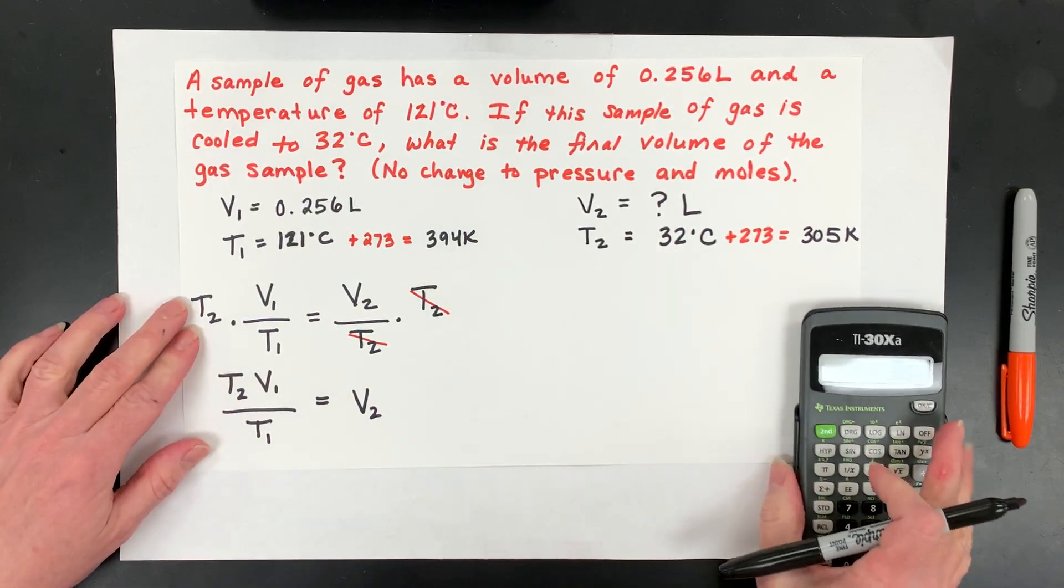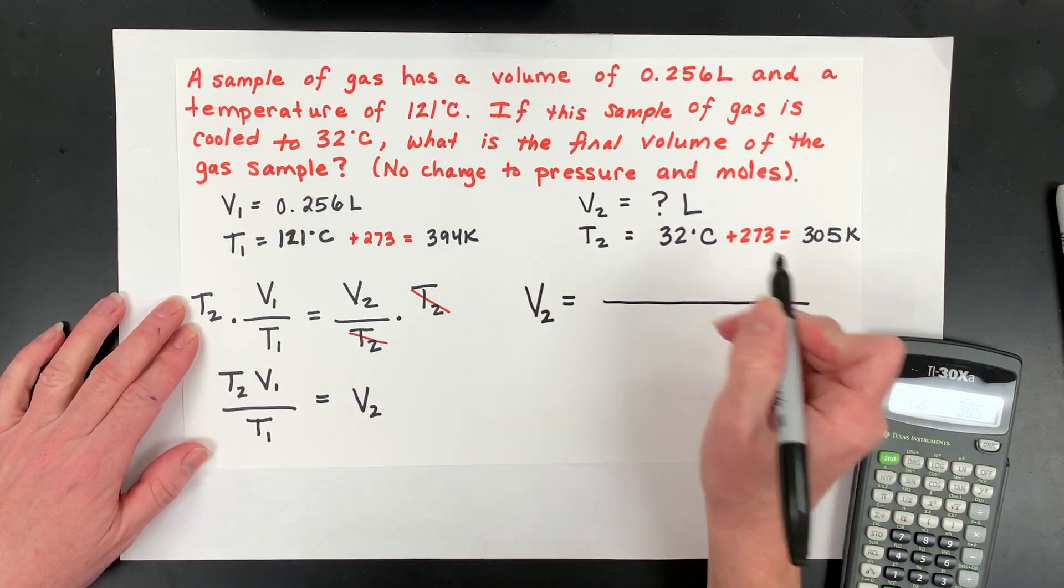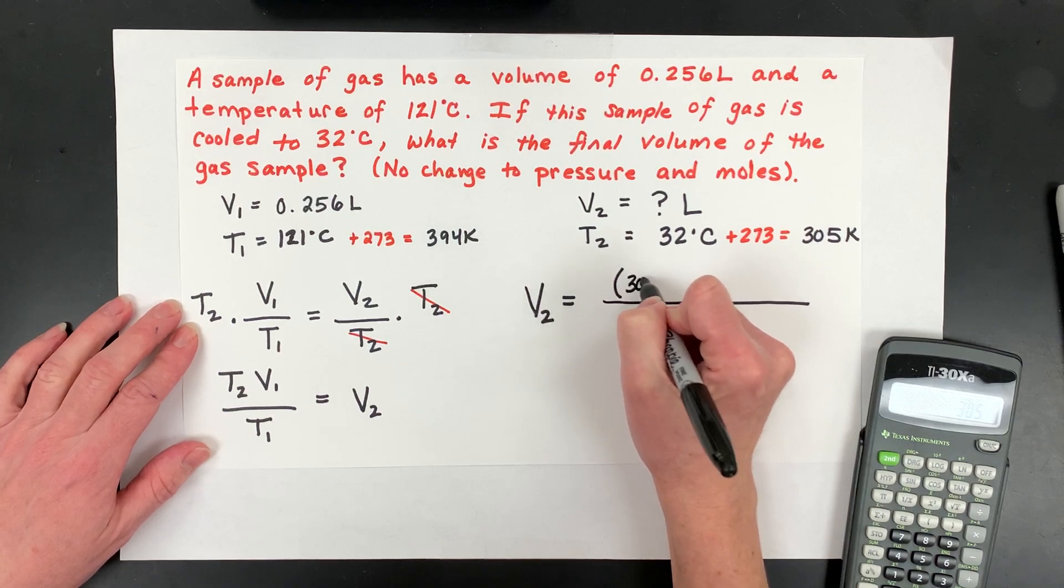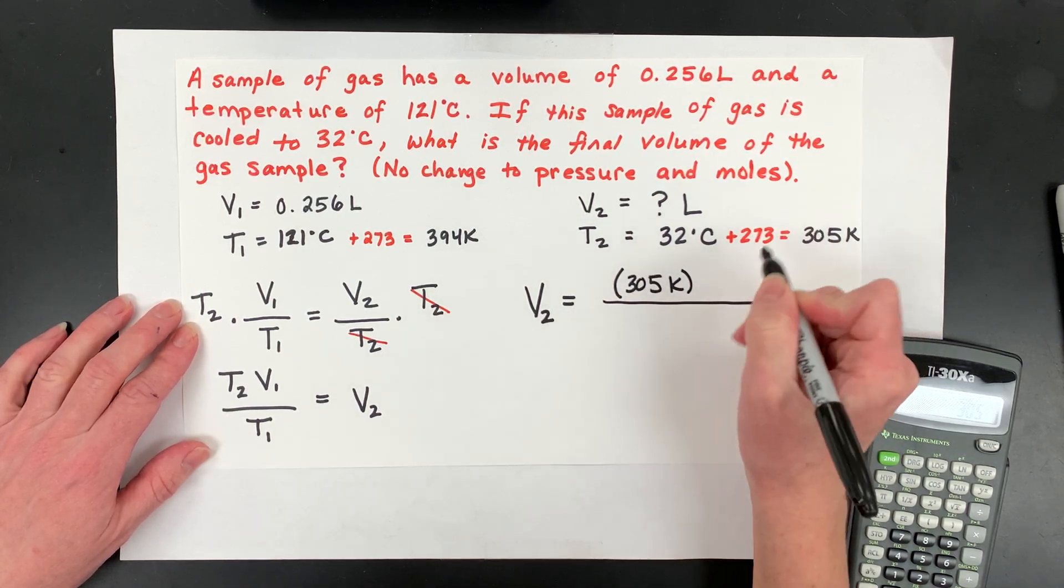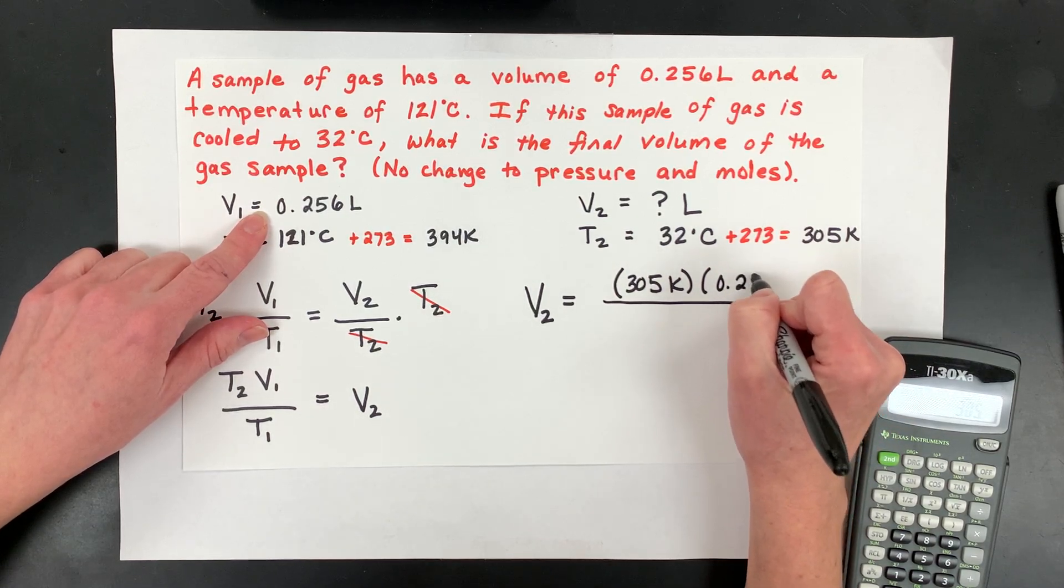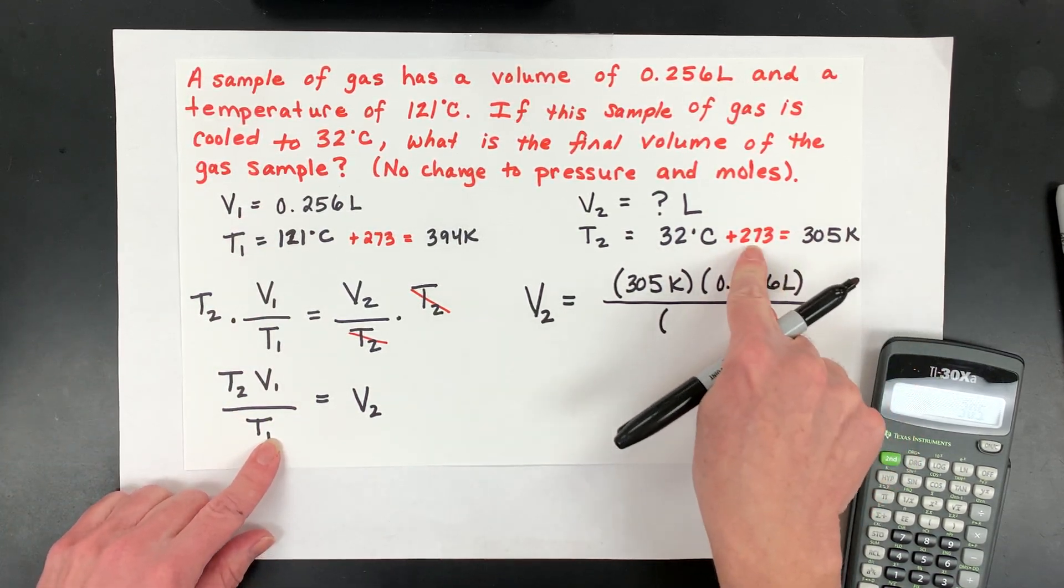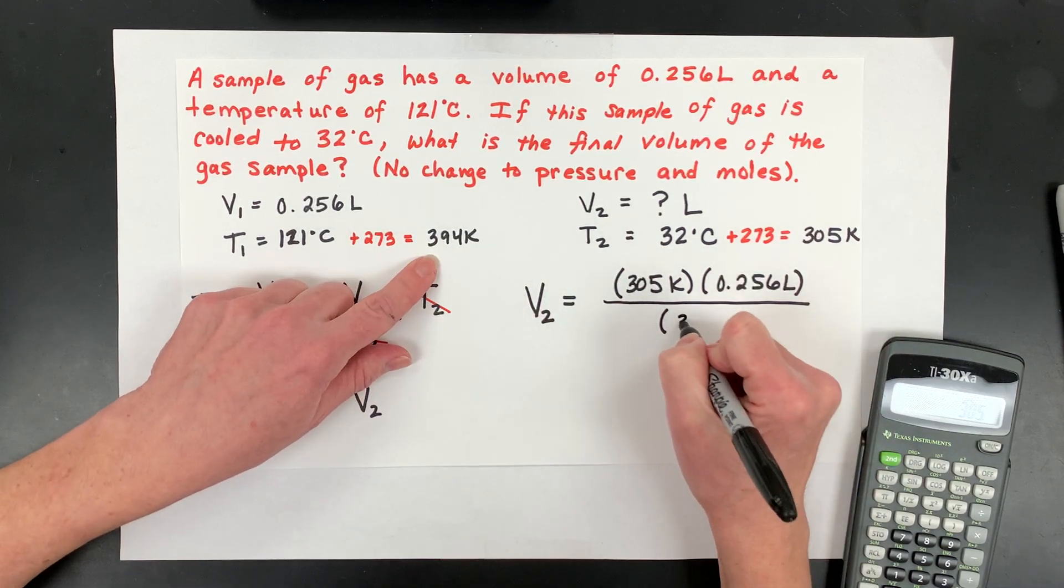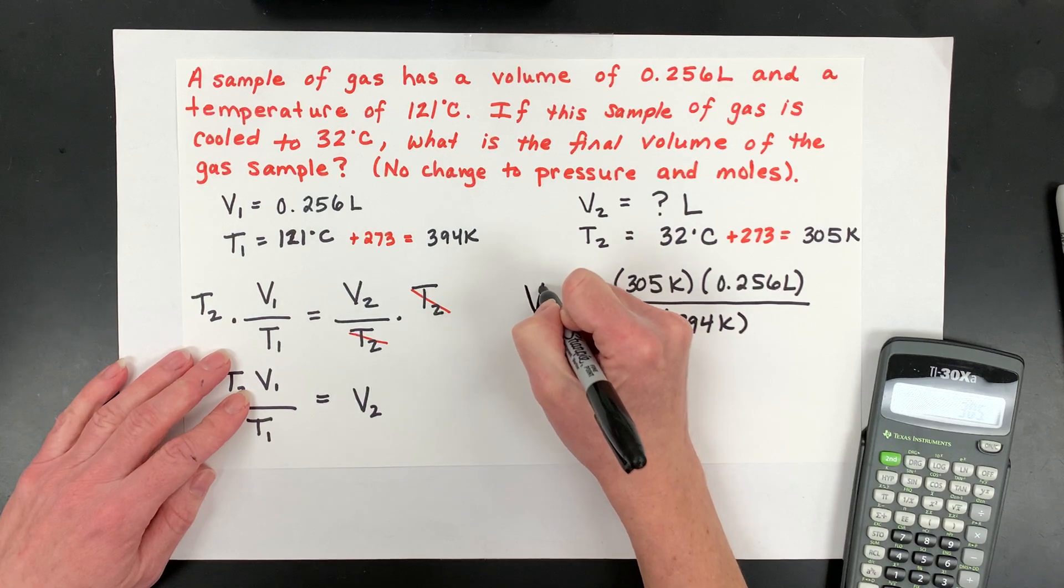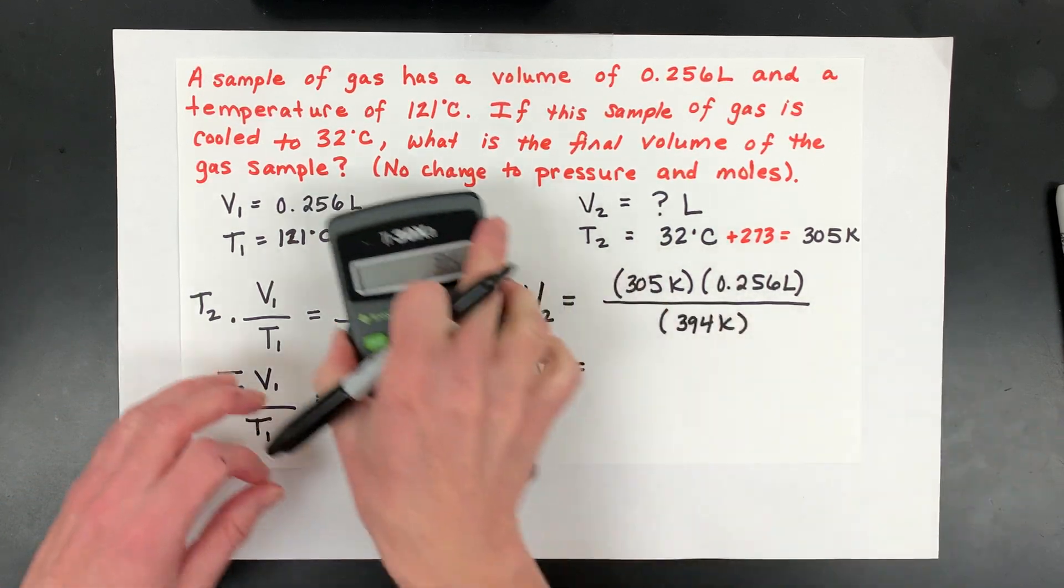There's my equation. So I'm just going to write it kind of big here. V2, and then I'm going to have T2. So just make sure now you go grab the right one. That's 305, because this is usually where human error comes in pretty prevalent. And then your volume one was 0.256 liters. And then our old temperature, the initial, was 394. I even almost said it wrong too. Get those in the right spot so that you don't make a mistake.